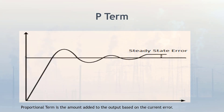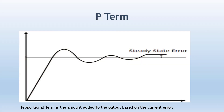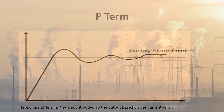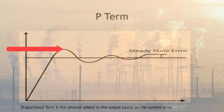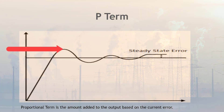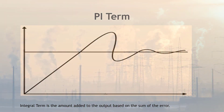You need to first understand what is the proportional term. The proportional term is the amount added to the output based on the current error. The idea for tuning is very simple — you start increasing the P term until you see acceleration in the output. If you see this output escalation, that means you are ready for the next term, which is the P and I term.